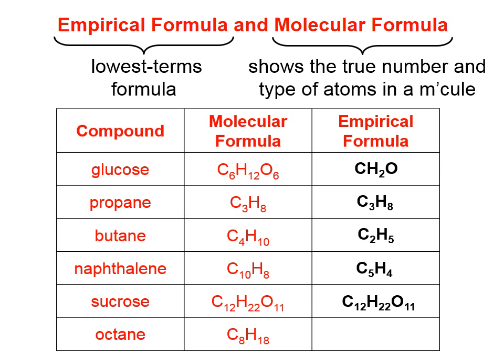For sucrose, it looks like it should be able to be reduced, but it can't be. And octane, the empirical formula is C4H9.